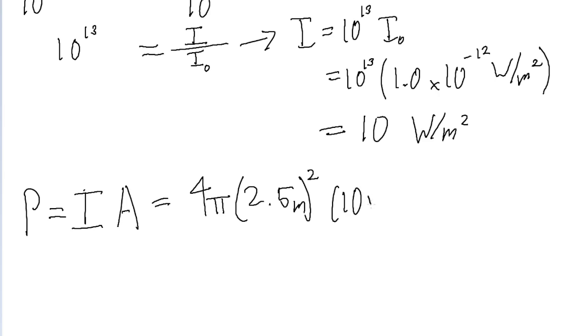Multiply by our intensity of 10 watts per meter squared. Put that into a calculator, and we find a power of about 790 watts. And so that is our answer to part A.